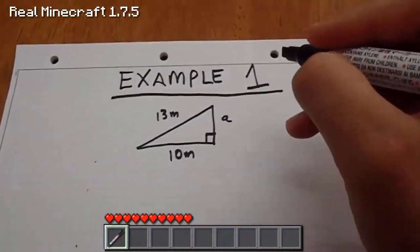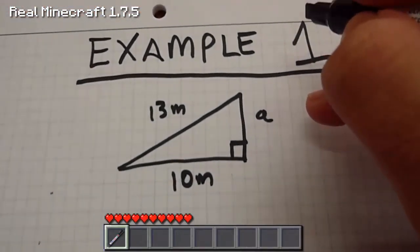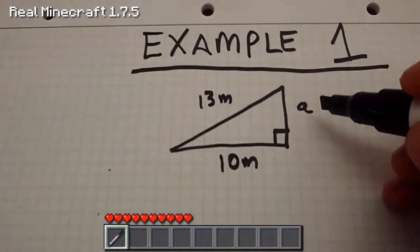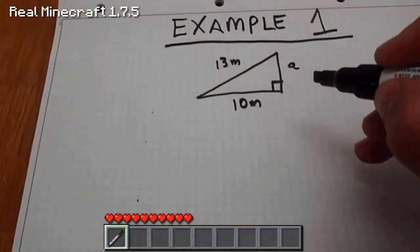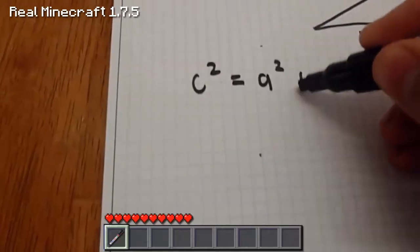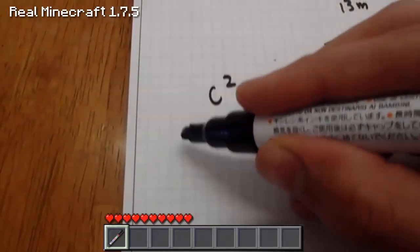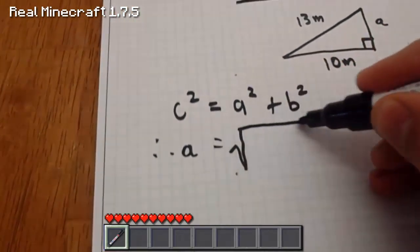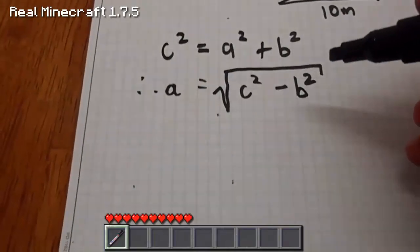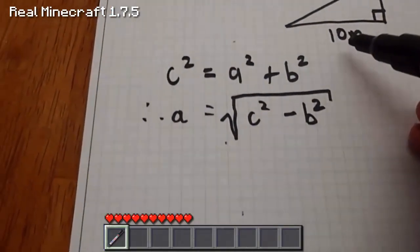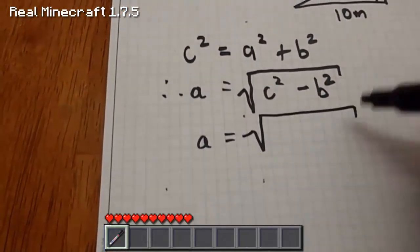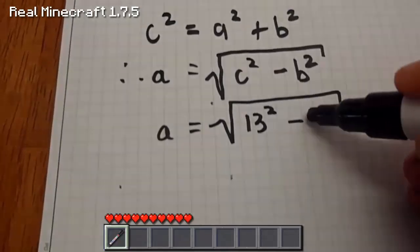So let's get into some examples now. Example one: we have a right-angled triangle with the hypotenuse being 13 metres, B being 10 metres, and the unknown length being A. From the equation before - C squared equals A squared plus B squared - rearranging gives us A equals the square root of C squared minus B squared. Now 13 is C because it's the hypotenuse, and B is 10, so we throw those values in: A equals the square root of 13 squared minus 10 squared.